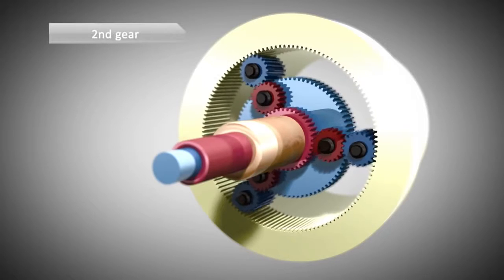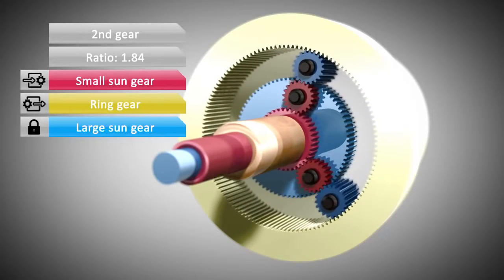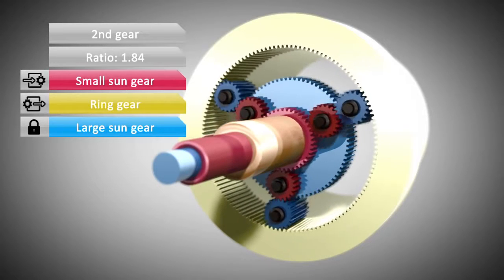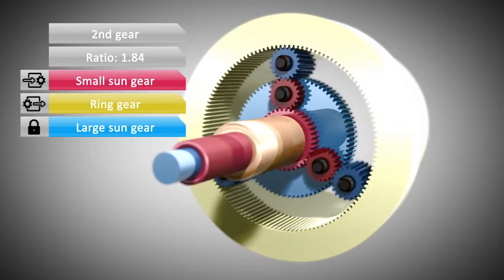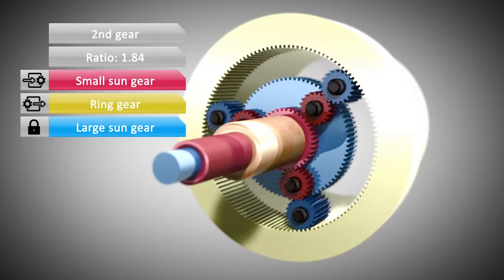In 2nd gear, the planet carrier is no longer a fixed member of the system. Now, the large sun is held stationary, so the large sun cannot rotate, but once again, the small sun is the input of the system and drives the ring gear.